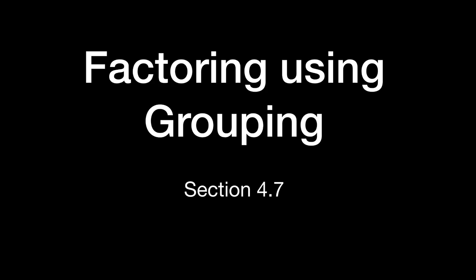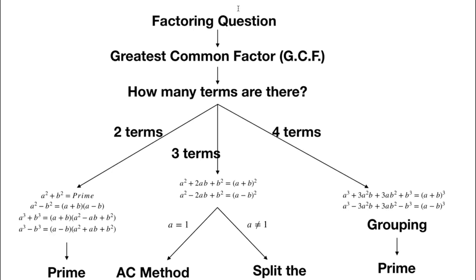Welcome to section 4.7. In this section we'll learn how to factor using grouping as a technique. When we get a factoring question, the first thing we should always think about is whether there is a GCF. If there is a GCF, we factor it out. What remains inside the parentheses leads to the question: how many terms do we have? In this lecture we'll talk about problems with four terms. We assume the GCF has already been factored out if there is one, and that these special formulas do not apply.